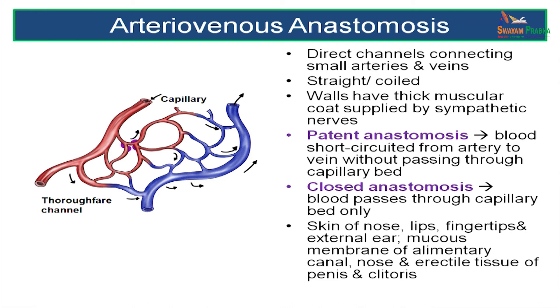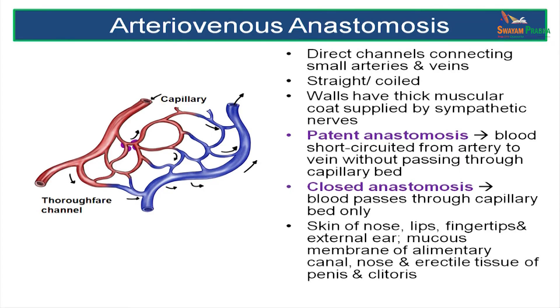Arteriovenous anastomoses are direct channels which bypass the capillary bed and run straight from the arteriole to the venule. There are two types: a patent anastomosis where blood is short-circuited from an artery to a vein bypassing the capillary bed, and a closed anastomosis where blood passes through a capillary bed. The closed type is seen in skin of the nose, lips, fingers, the external ear, mucous membranes of the alimentary tract, the nose and erectile tissues of the penis and clitoris.